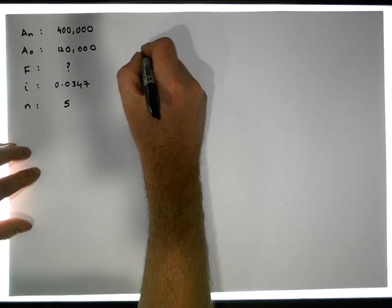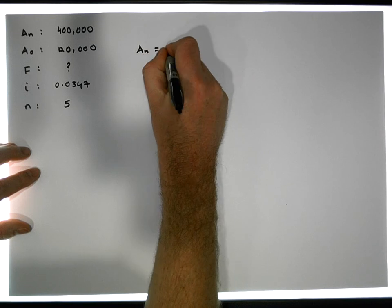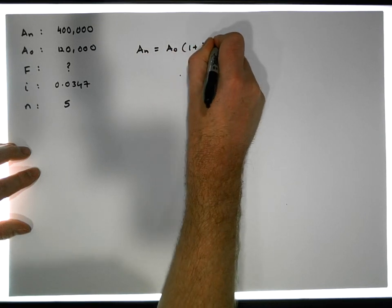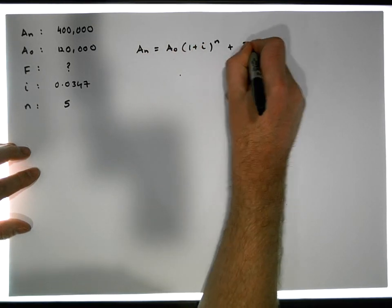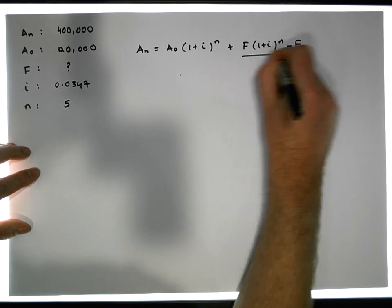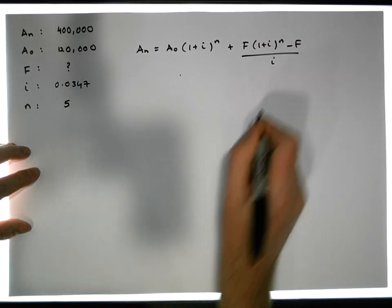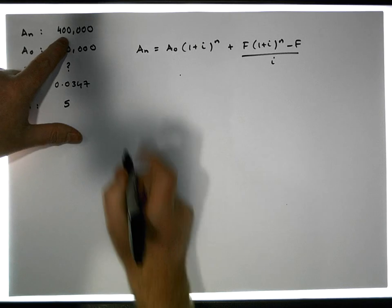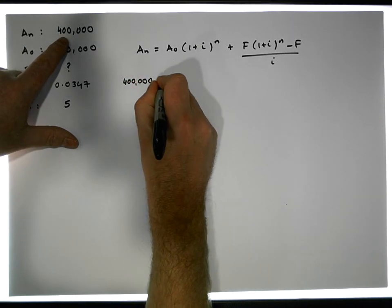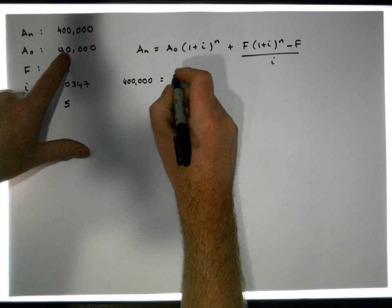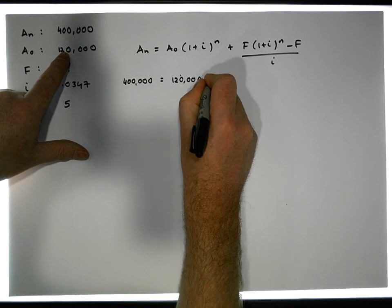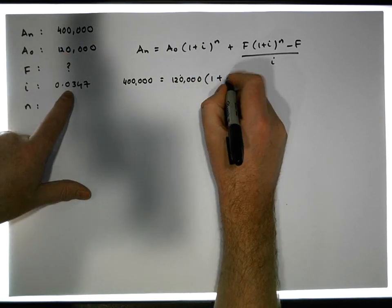Using the formula Aₙ = A₀ × (1 + i)ⁿ + f × [(1 + i)ⁿ − 1] / i, we substitute our values: 400,000 = 120,000 × (1 + 0.0347)⁵ + f × [(1 + 0.0347)⁵ − 1] / 0.0347.